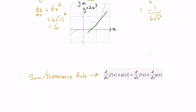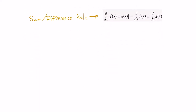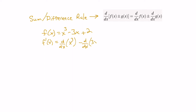Now let's take a look at the sum, or if you like the difference rule. This states that if we're taking the derivative of two functions that are added or subtracted, we can simply take the derivative of the first function and add or subtract the derivative of the second function. For example, let's say we had the function f of x equals x cubed minus 3x plus 2. Applying the sum rule, the derivative would be the derivative of x cubed, minus the derivative of 3x, plus the derivative of 2.